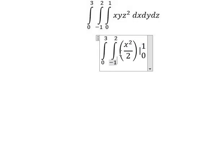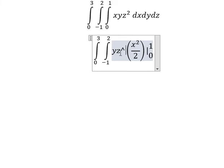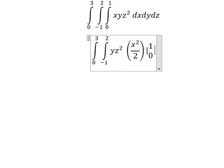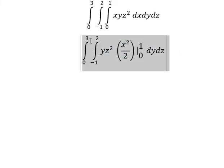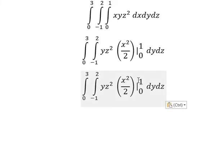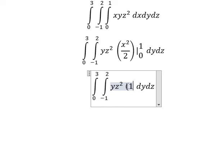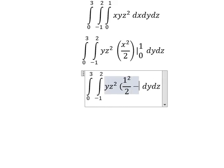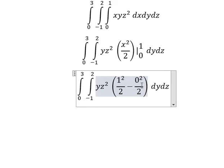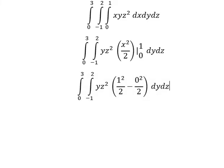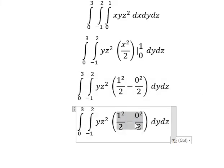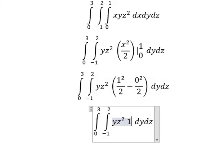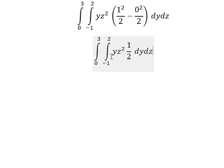I will put y and z in here and we put dy dz. So I will put 1 in here and 0 in here, so we have 1 squared over 2 minus 0 squared over 2, and this gives us 1 over 2. Next we have y and dy.